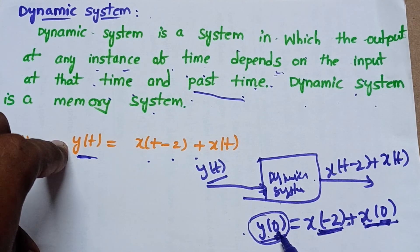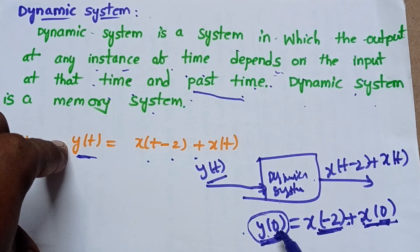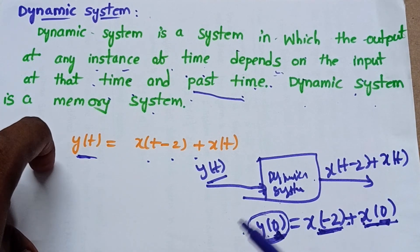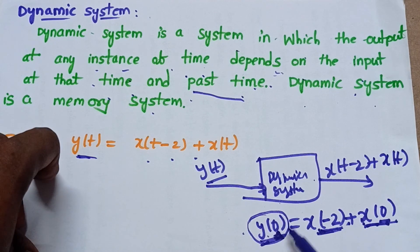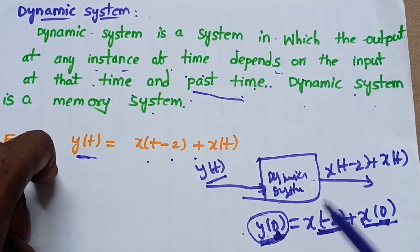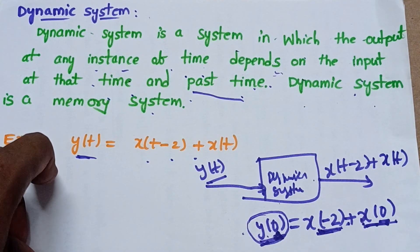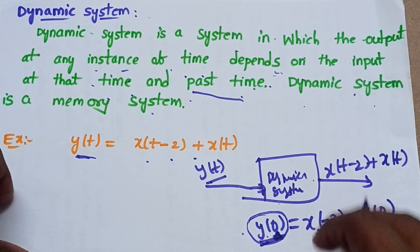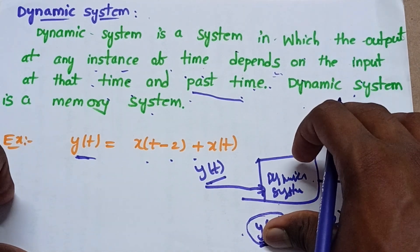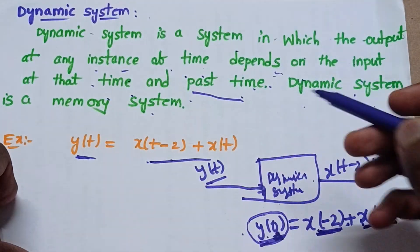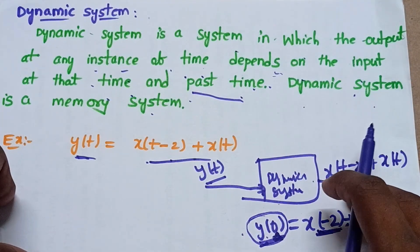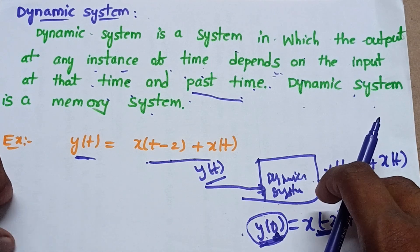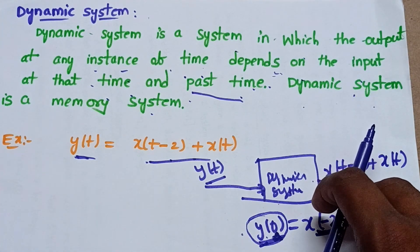When we apply a signal to a dynamic system, the output is a combination of the present signal and the past signal. This is about dynamic systems and this is the example for a dynamic system. I hope you understood — thank you for watching this video.